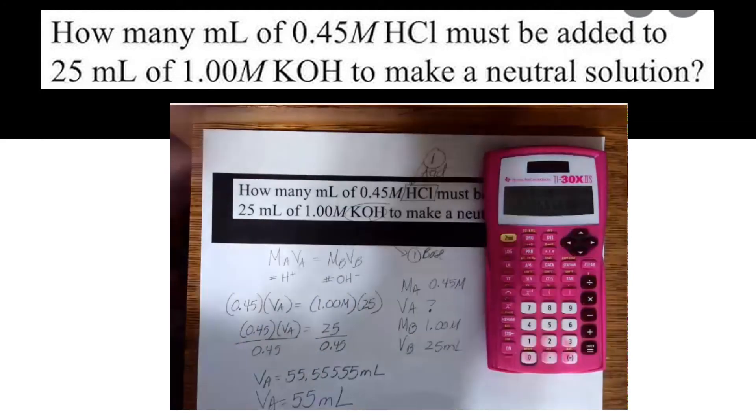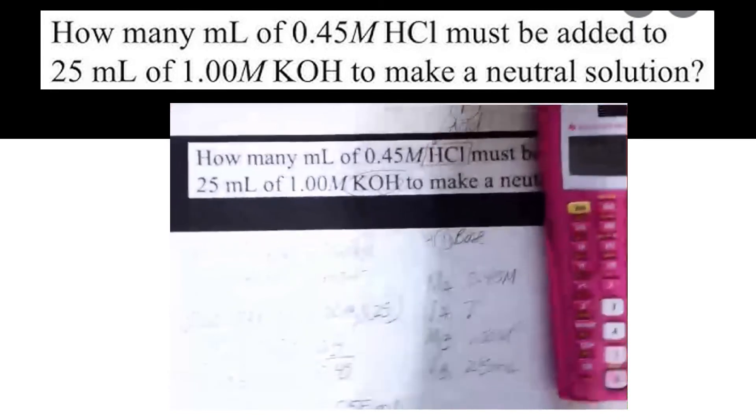What was my volume in milliliters? How many significant figures? 2, 3, 2. So 2. So the volume of my acid is 55 milliliters. And there we go. So that is how you solve this problem.